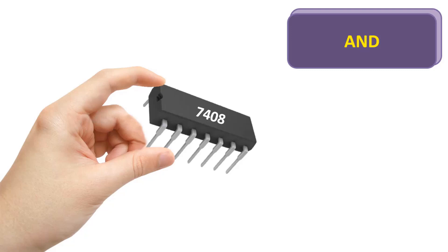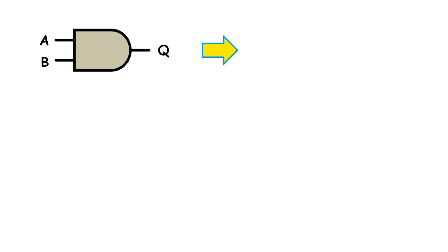Let's start with the AND gate. Its symbol is like this, and an output can consist of 2 or more inputs. We can represent the inputs as A and B, and the output as Q. In its mathematical expression, the output is represented as the product of the inputs — that is, it is expressed as Q equals A times B.